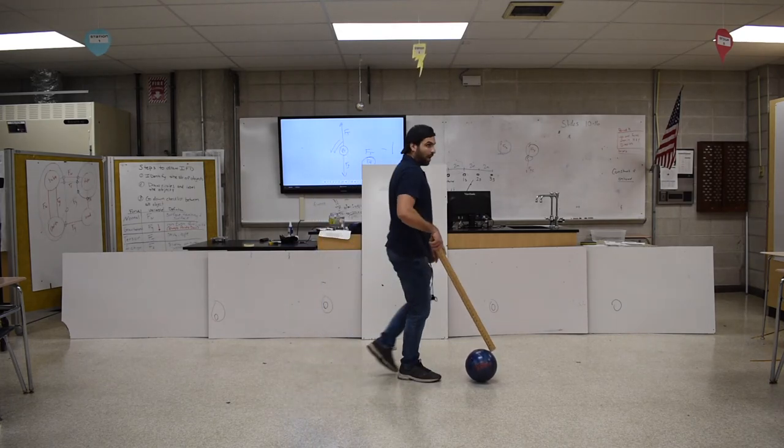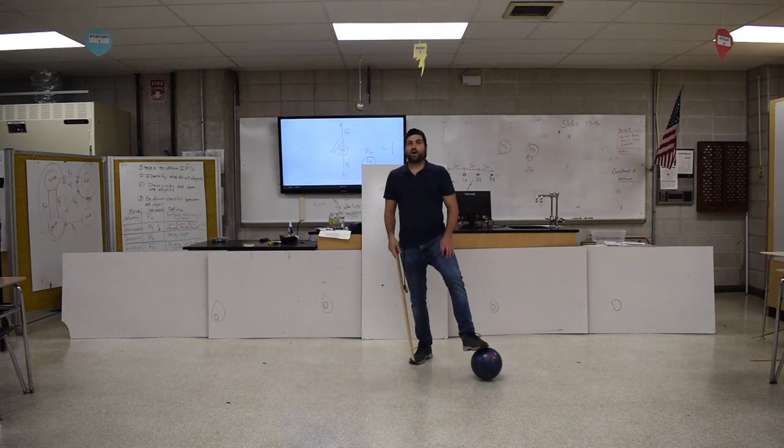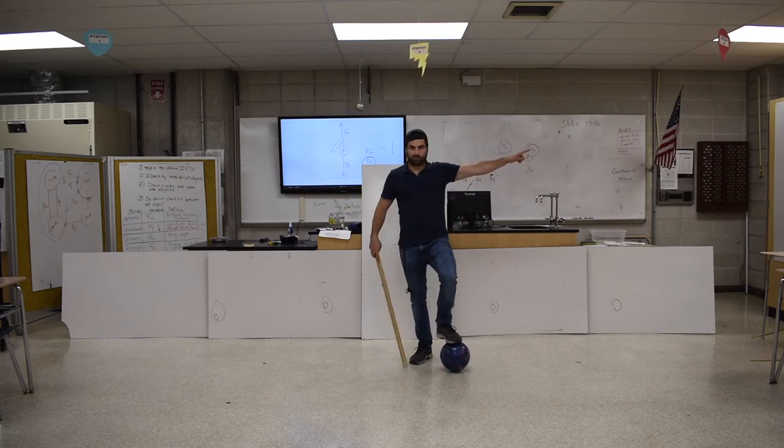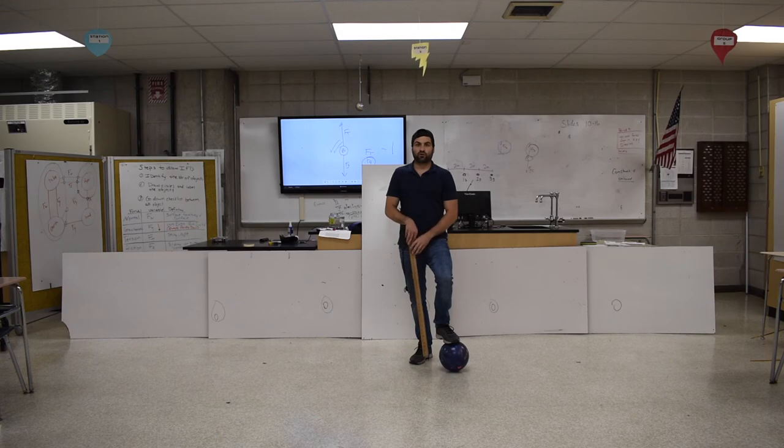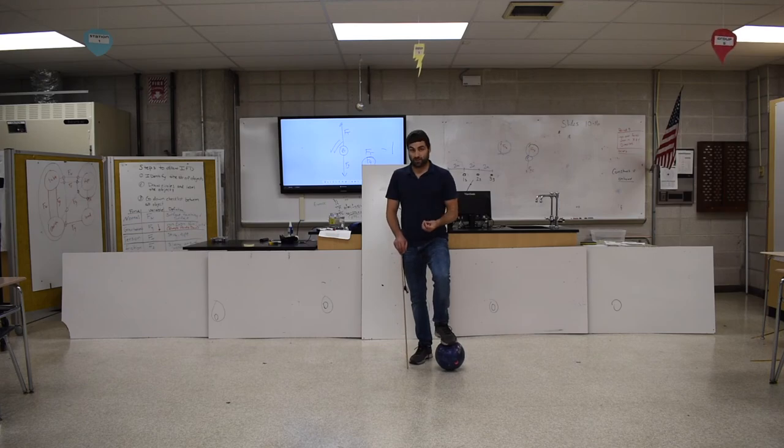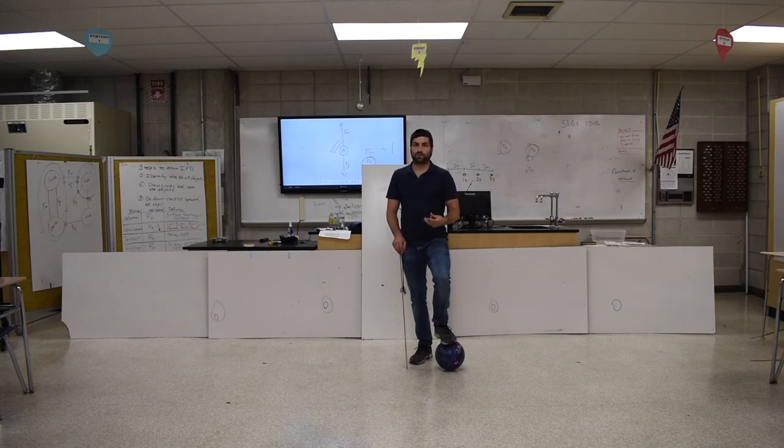As you see what happened is the motion was this way going to the right. My force applied was to the left. So the bowling ball was definitely moving originally at some constant speed. Then I began to hit it until it stopped. Therefore there was an acceleration slowing the object down.